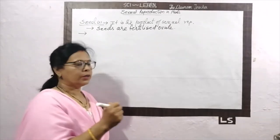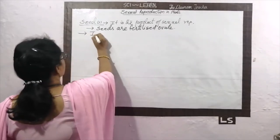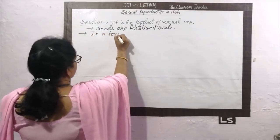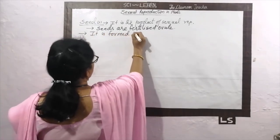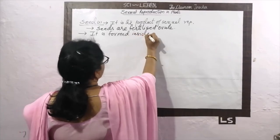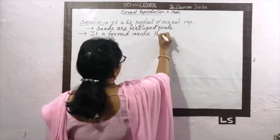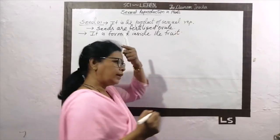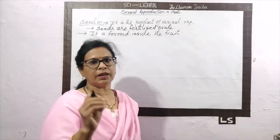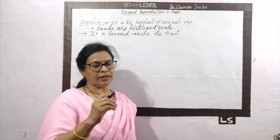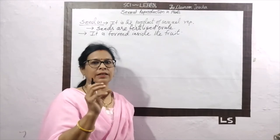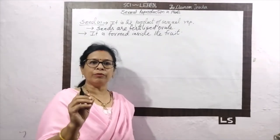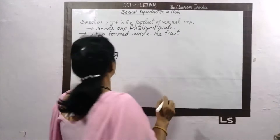Where is the seed formed? It is formed inside the fruit. The fruit contains the seeds — seeds are present inside the fruit. A typical seed is made up of or consists of three important parts.